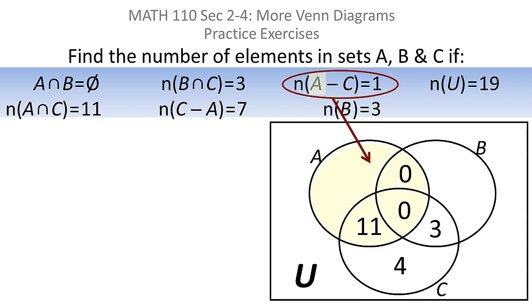They gave us another difference and they said this time do A minus C. So this time you start off with A and let C take a bite out of it. So if you take the set A and let C take a bite out of it, and you're supposed to get one for the resulting quantity, if there's a zero here and you need one altogether, that one has to go there.